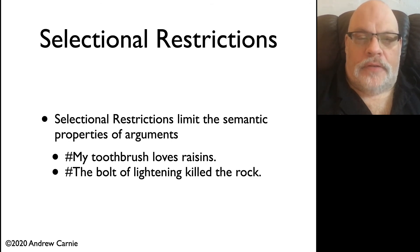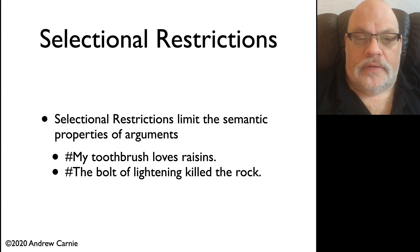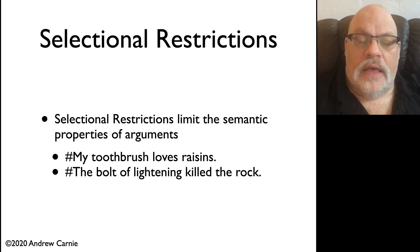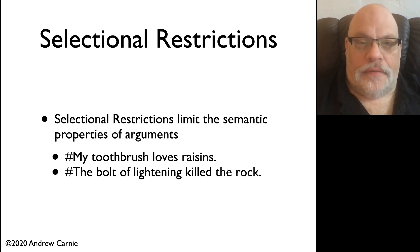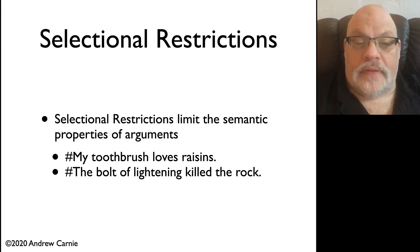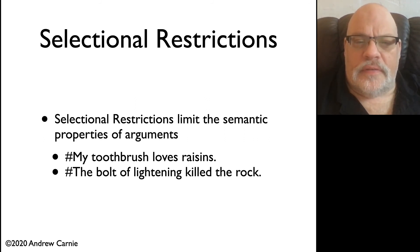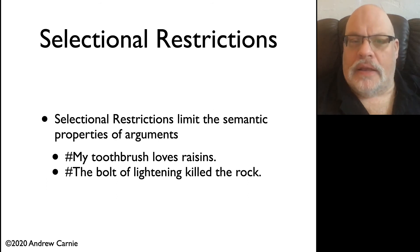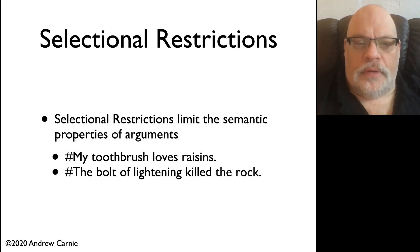Another kind of information that must be stored with the lexical entry of any particular word are what we call selectional restrictions. Selectional restrictions are limits on the semantic properties of the arguments that occur with a particular predicate. So let's take loves for example. Typically speaking, only things that are capable of love can serve as the subjects of love. So the sentence my toothbrush loves raisins is semantically very strange. Be very careful here — it is in fact possible to give this a poetic, idiomatic, or metaphoric reading. What I'm talking about here is the literal interpretation of this sentence.